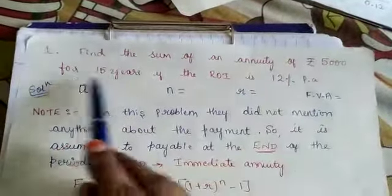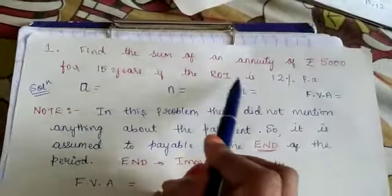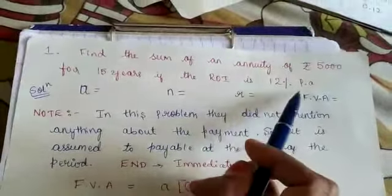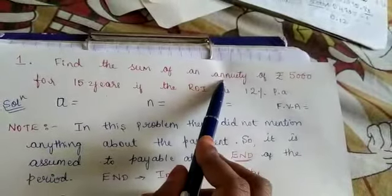First problem, let us start. Find the sum of an annuity of Rs.5000 for 15 years if the rate of interest is 12% per annum.